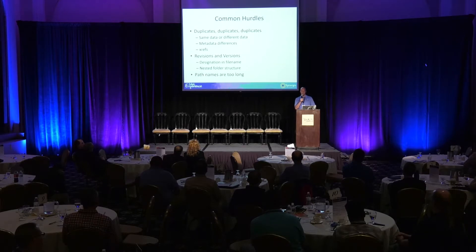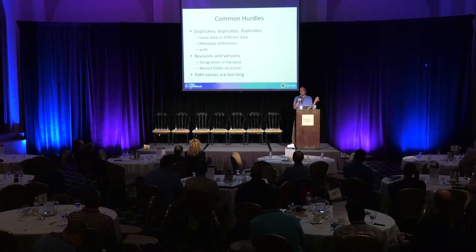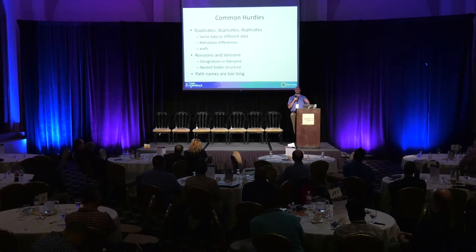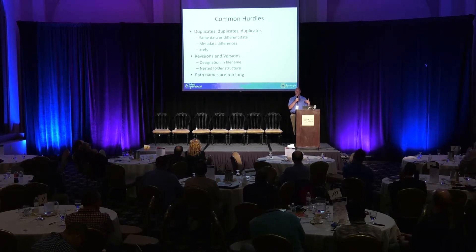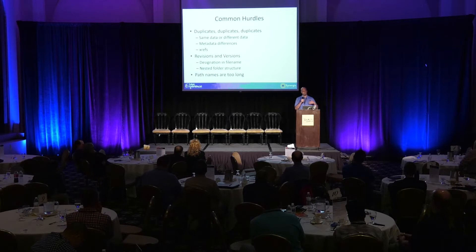Another really interesting thing is the path names. We have gone back and forth internally about what is the appropriate length to allow the path to be. The path itself is the middle section — leading it is the server name and the share name, which can be 25 or 30 characters. On the tail end is the file name itself, which can be up to 256 characters. When we nest paths down in the virtual library and reorganize the data locally, we have to consider all these different paths. It's a constant conversation and reevaluation about exactly what the maximum allowable path is for you.